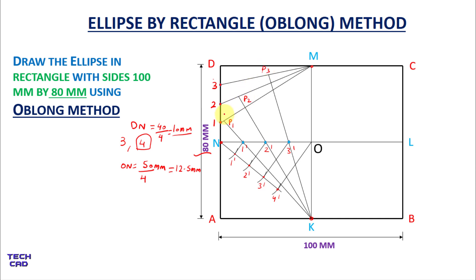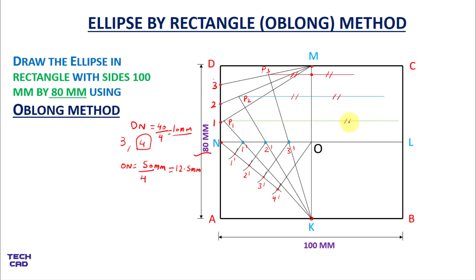Now from P3, I will extend towards horizontal lines, and from P2 and P1 as well. Extend the P3 line towards the right side — the distance from P3 to this new point is exactly the same as from P3 on the other side. The same applies for P2 and P1 — extend each towards the right side, with equal distances.